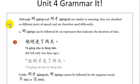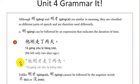Although 刚 and 刚才 have similar meanings, they are different parts of speech and used differently. 刚 can be followed by an expression indicating duration of time — 他刚走了两天, he left only two days ago. You can't say 他刚才走了两天, as 刚才 has the feeling of just a few moments ago. Also, unlike 刚才, 刚 cannot be followed by negation words 不 or 没.